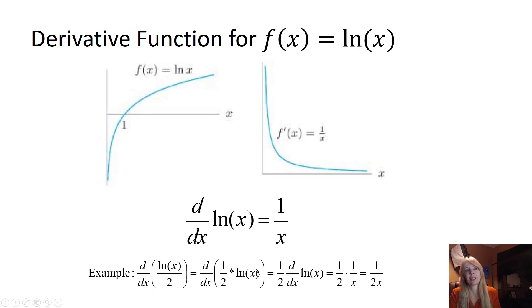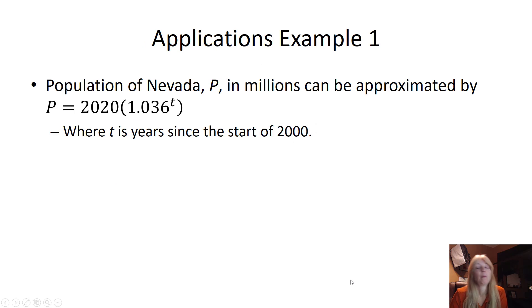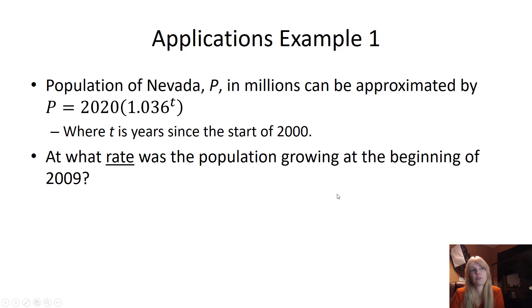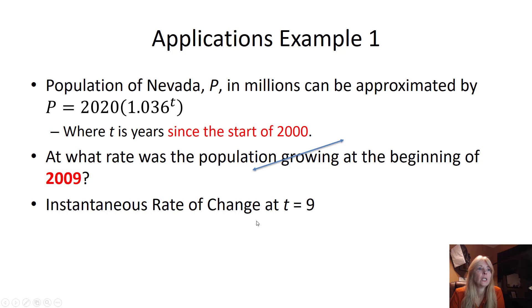In this section there are a lot of shortcut formulas to have on your formula sheet. Here's an application: the population of Nevada, P in millions, can be approximated by a given function where t is years since the start of 2000. At what rate was the population growing at the beginning of 2009? Right away I know I need to take a derivative, and I want the instantaneous rate of change at t = 9.